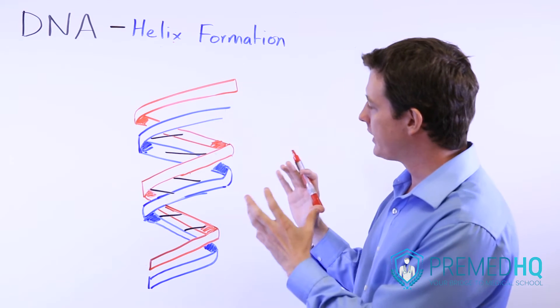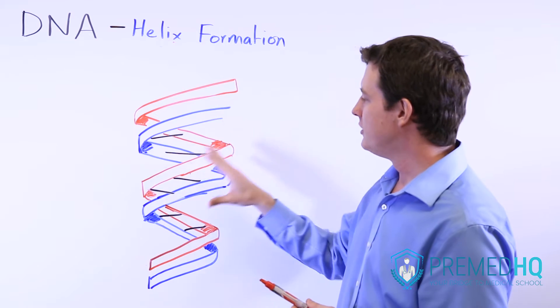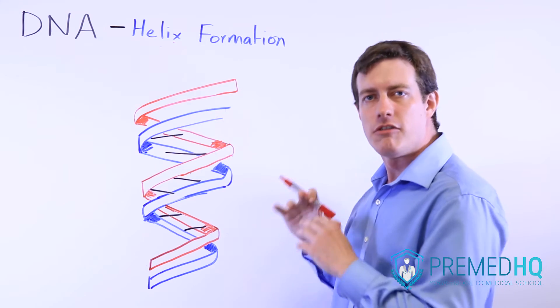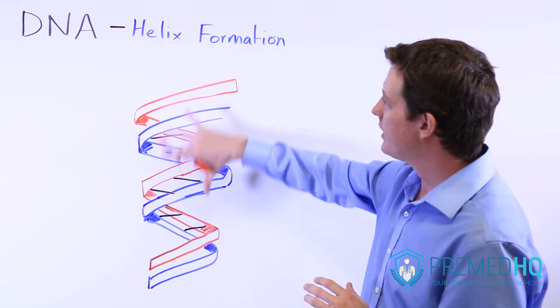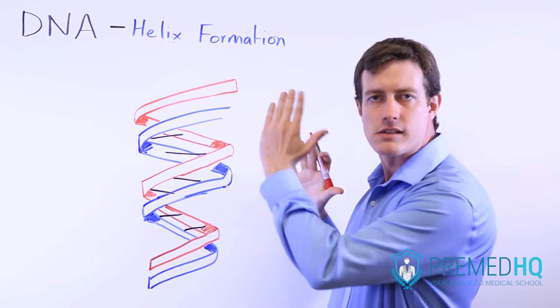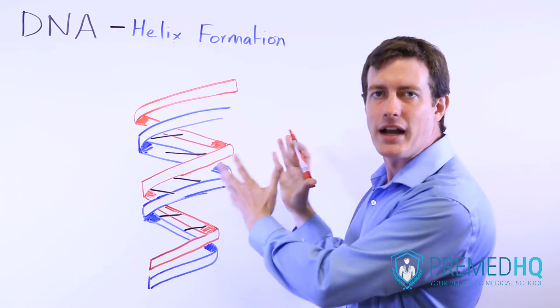Essentially the bases face inward. And as a result of this and the general geometry or stereochemistry of those phosphate sugar linkages, you tend to see the DNA assemble into a helix whenever those two strands, the main strand and its complementary strand, are binding with each other.